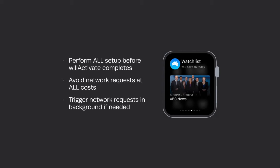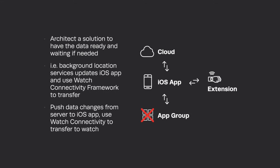When a user swipes up and a glance appears, they'll see a little loading indicator in the top right and a last-updated label — what they're actually looking at is a screenshot of your glance while it loads. Your glance controller is being initialized and set up, and once `willActivate` finishes Apple gets rid of the screenshot and shows whatever your interface looks like. So if your interface looks nothing like it was before, the user will see a lot of crazy jumping around. It's really important, if possible, to avoid making network requests.